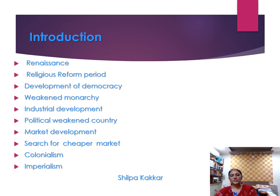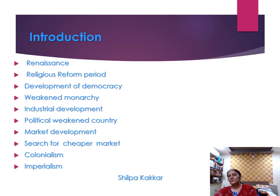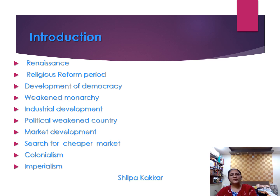Though democracy developed in England, industrial development brought complete change in the field of production. As a result, there was a great demand for raw material. They wondered where to get cotton, indigo, silk, muslin, jute, and other agricultural products at a cheaper rate. They chose a politically weakened country like India, where they got raw materials at a very cheap rate. The industrial revolution led to a demand for raw materials in the factories in Britain.